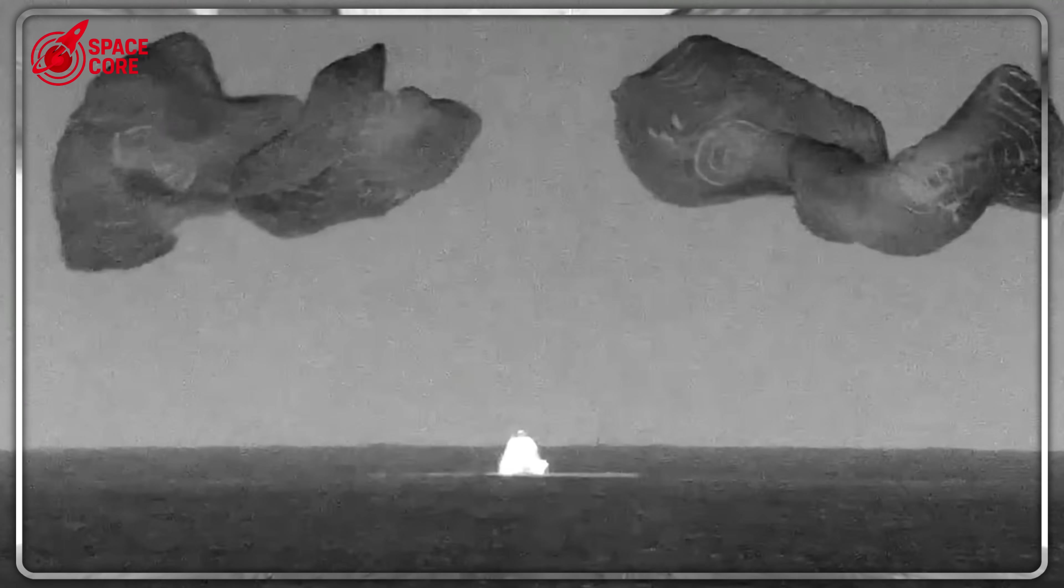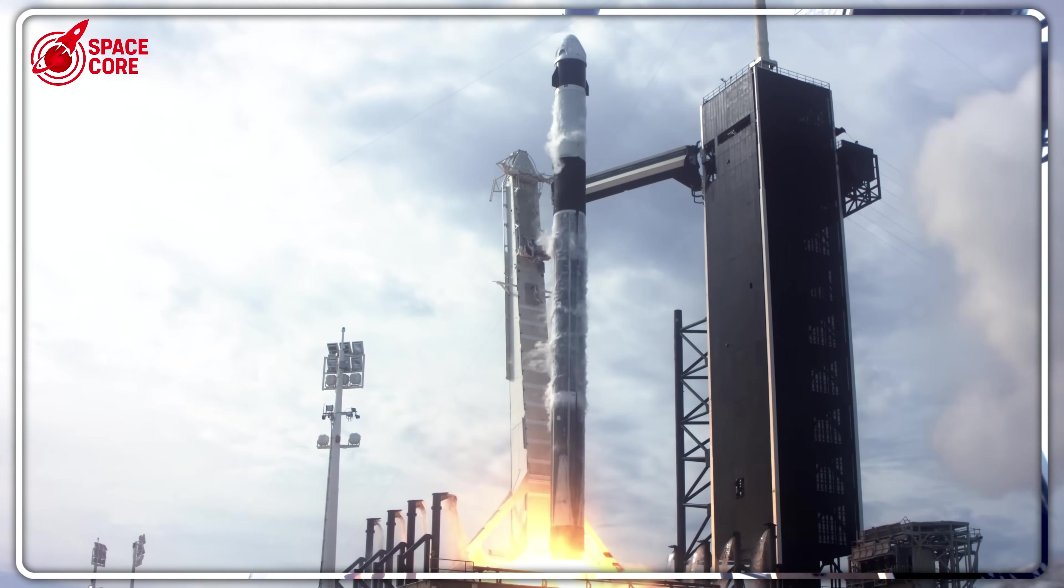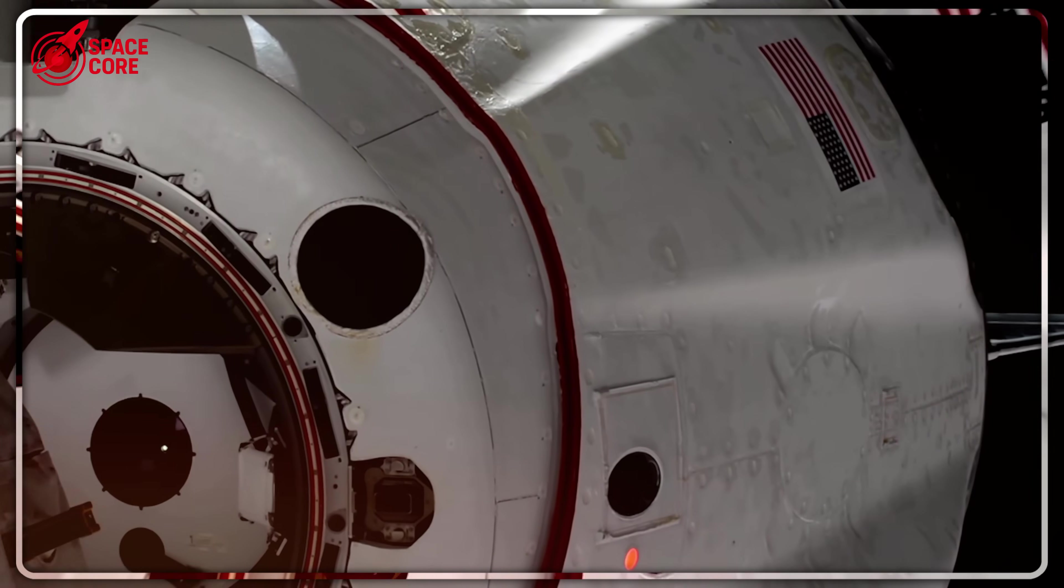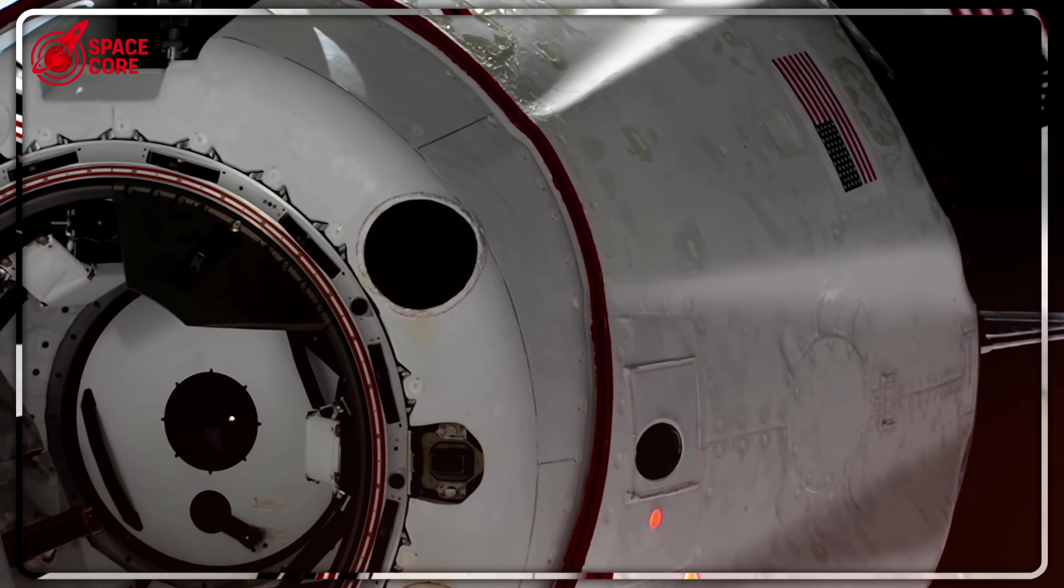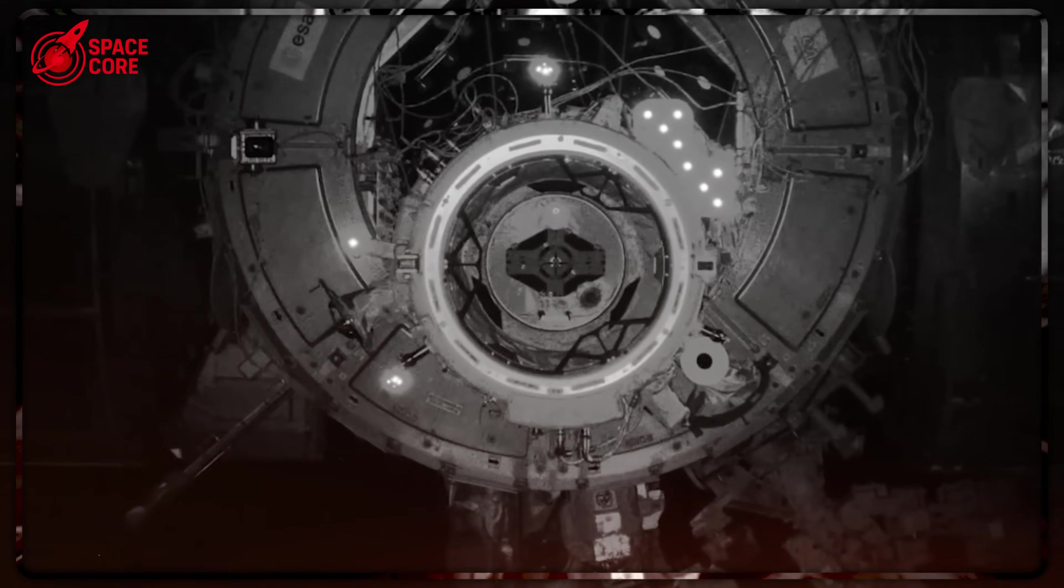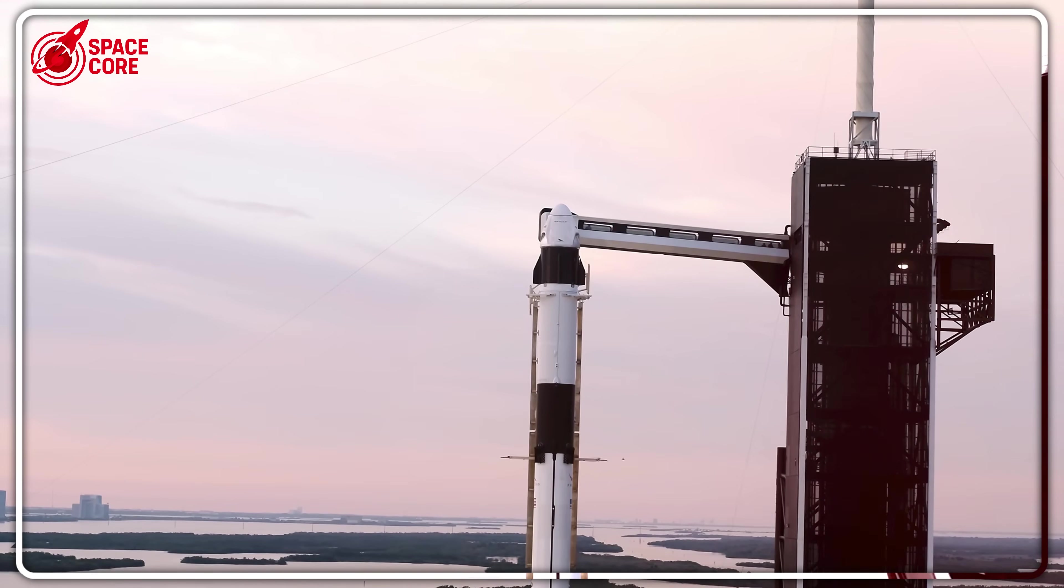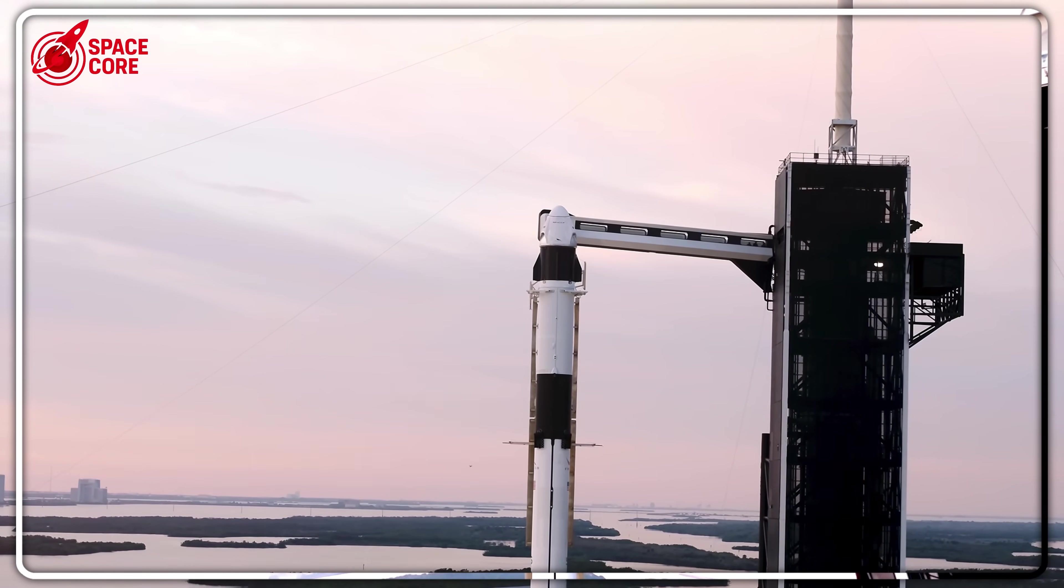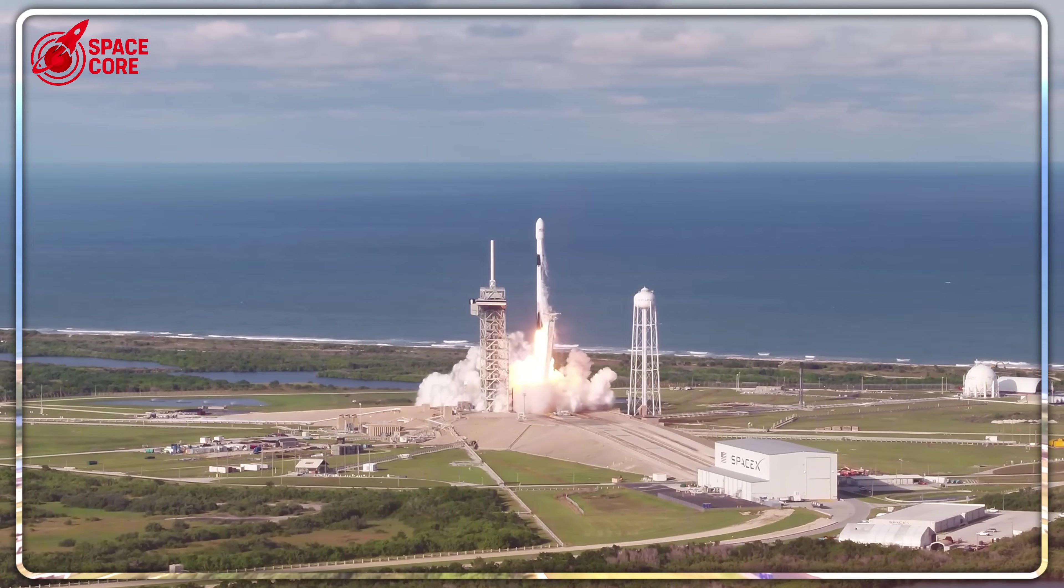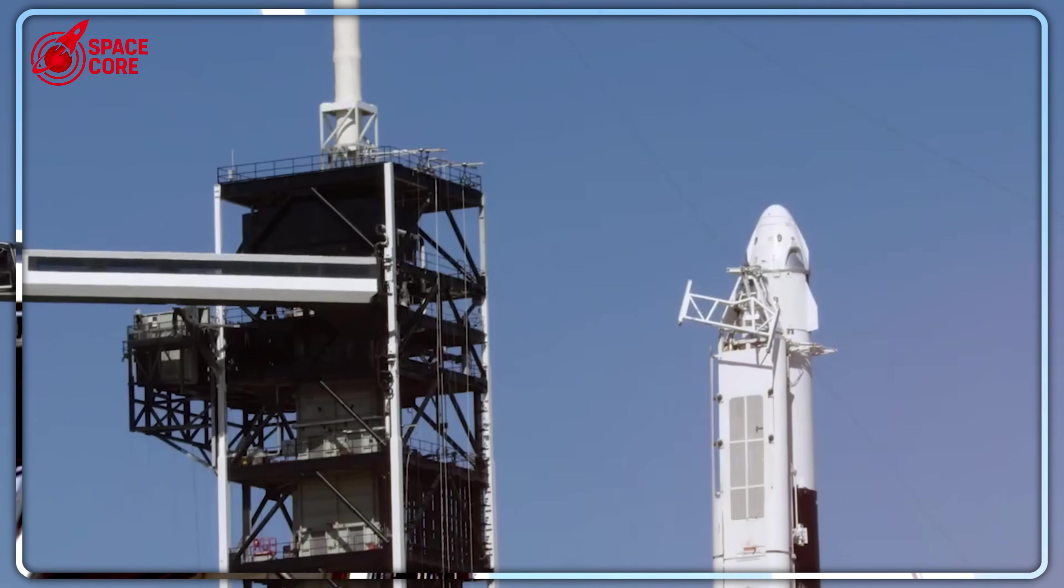During a routine ground test, Crew Dragon capsule C204 exploded in a spectacular fireball visible for miles. The blast was so violent it sent debris flying hundreds of feet and completely destroyed months of work in seconds. The cause? A faulty valve leaked highly toxic propellant that ignited catastrophically. In that moment, everyone realized rocket-powered landings weren't just technically challenging, they were potentially lethal for astronauts. For a program where crew safety is everything, that explosion was a death sentence for propulsive landing as a primary system.